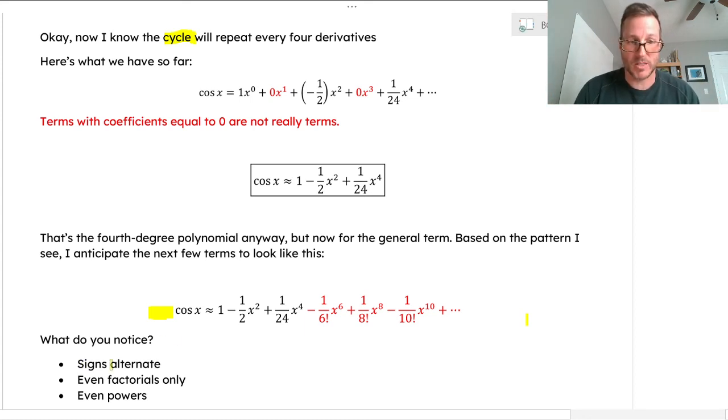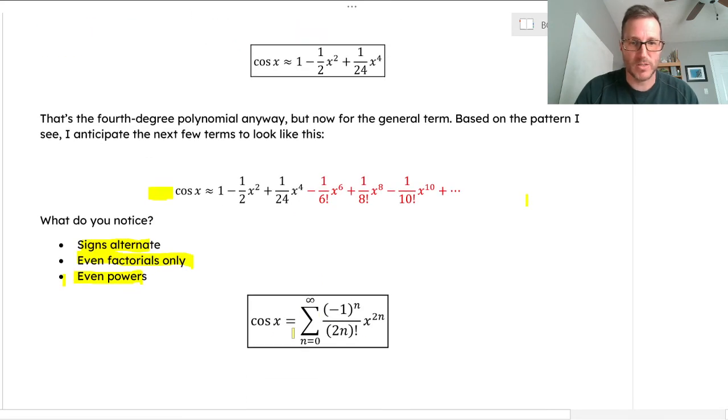You should notice that the signs alternate back and forth, positive to negative. There's only even factorials in the denominators, and there's only even powers, and those powers and factorials match up. We need an alternating pattern, so some kind of negative one to the n. We need some kind of pattern that goes 2, 4, 6, 8. Oh, that's a linear pattern. 2n would do that, and then the factorials are exactly the same—2 factorial, 4 factorial. They increase by 2, so 2n factorial. Here is cosine x, infinite polynomial.